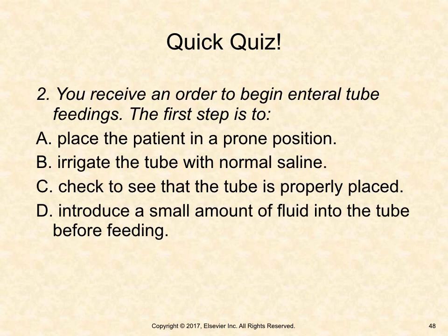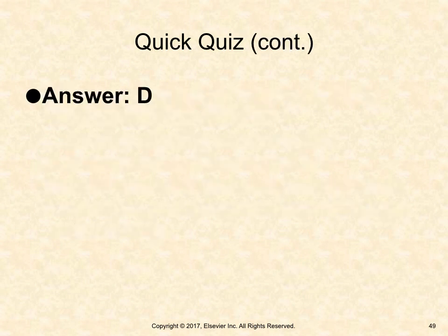Quick quiz: You receive an order to begin enteral tube feedings. The first step is to: A. Place the patient in a prone position. B. Irrigate the tube with normal saline. C. Check to see that the tube is properly placed. D. Introduce a small amount of fluid into the tube before feeding. The answer is D—check for patency before starting feedings.